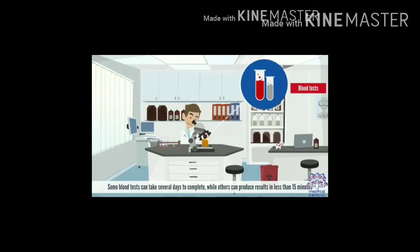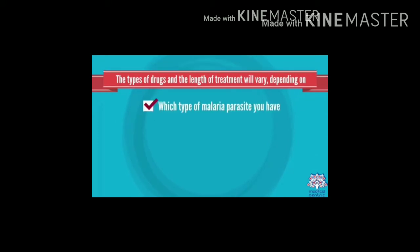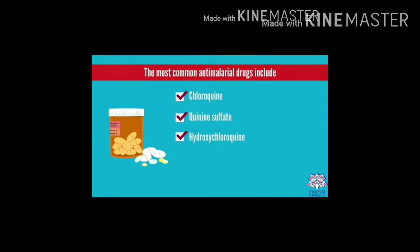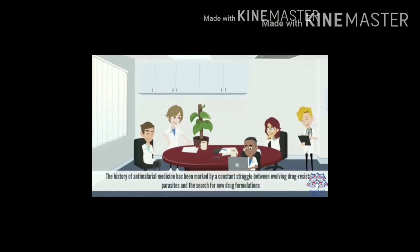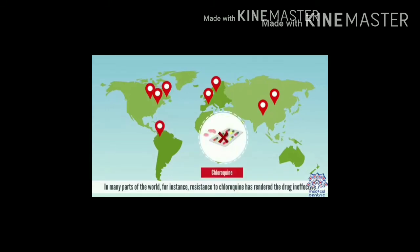Treatment varies depending on the malaria parasite type, severity, age, and whether the patient is pregnant. Common anti-malarial drugs include chloroquine, quinine sulfate, hydroxychloroquine, mefloquine, and combinations of atovaquone and proguanil. Resistance to chloroquine has rendered it ineffective in many parts of the world, leading to constant development of new drug formulations.